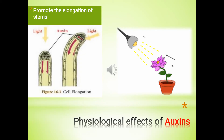Now we are learning about the physiological effects of auxins. Number 1: Auxin is a plant hormone produced in the stem tip that promotes cell elongation. When light falls on the plant, this auxin moves to the darker side of the plant, causing the cells there to grow larger than corresponding cells on the lighter side of the plant. This produces a curving of the plant's stem tip towards the light, and this type of plant movement is known as phototropism.